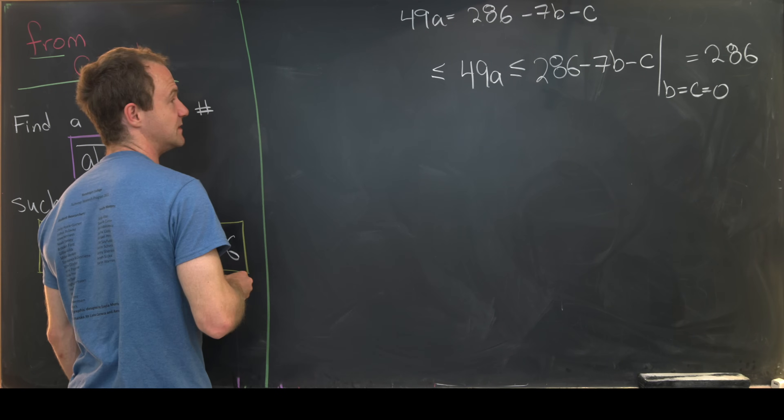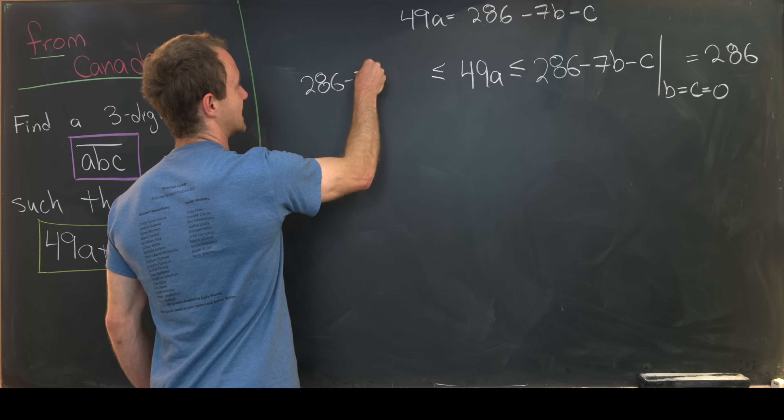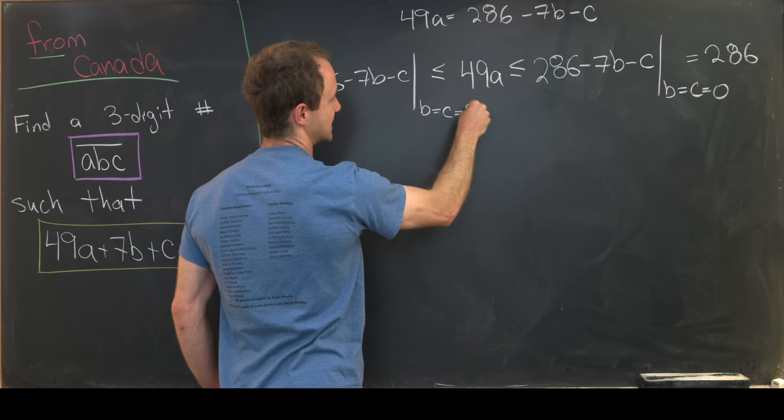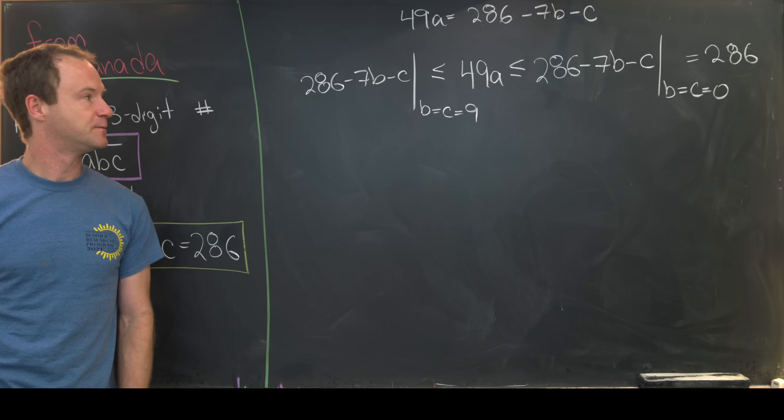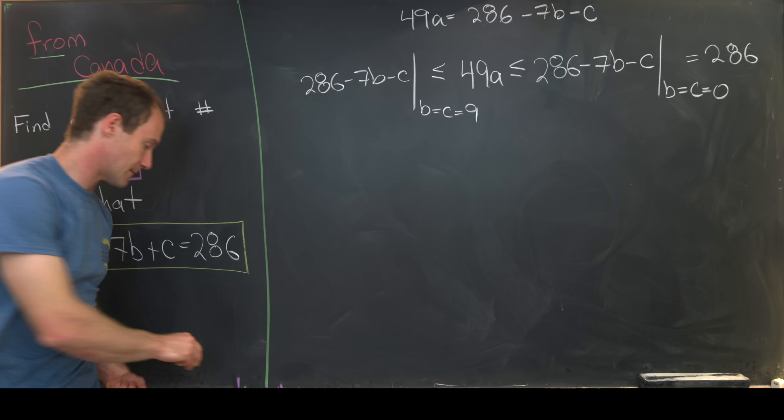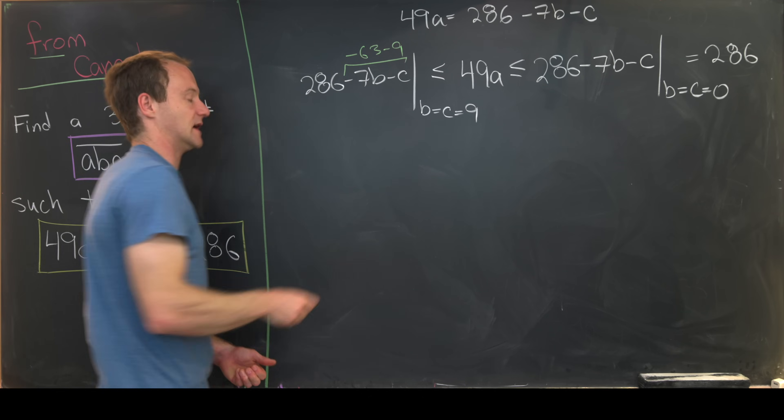Furthermore, 49A is going to be greater than or equal to 286 minus 7B minus C, where we evaluate this at B equals C equals 9. So that means we've got 286 minus 63 minus 9. So we can write that here, minus 63 minus 9.